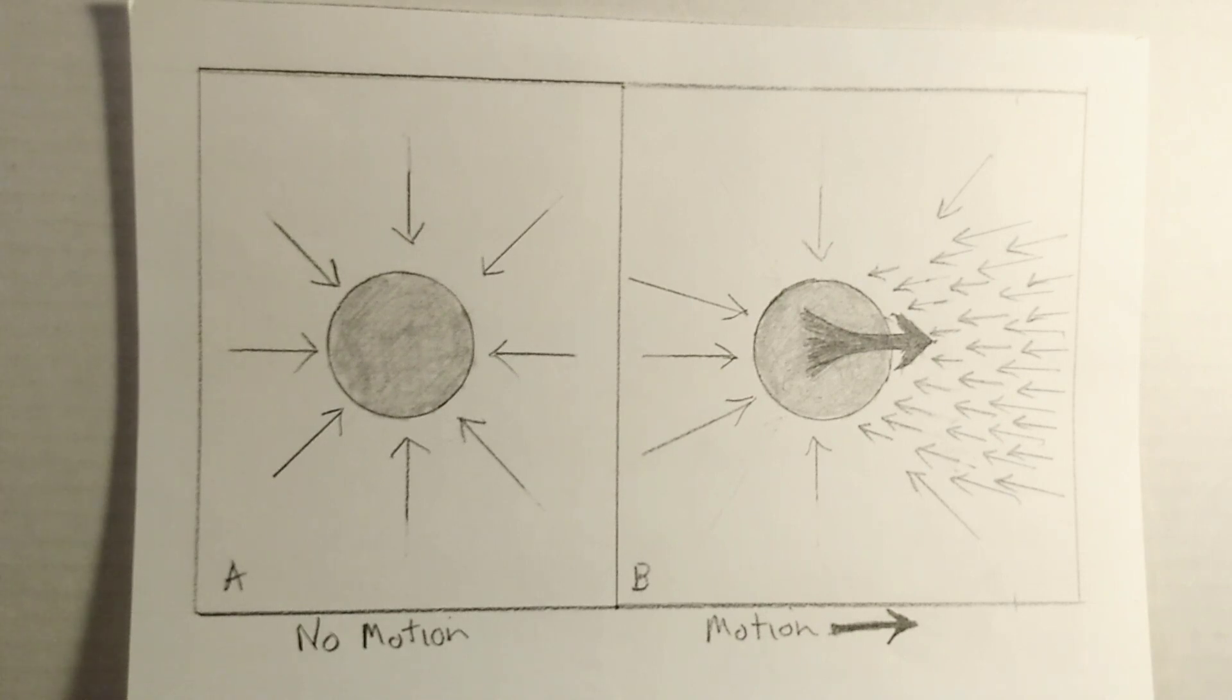But what if we are both right? Look at the drawing. There are two round elevators. The elevator on the left is not accelerating. No acceleration equals no gravity. The force of empty space or anti-gravity pushes on all sides equally.